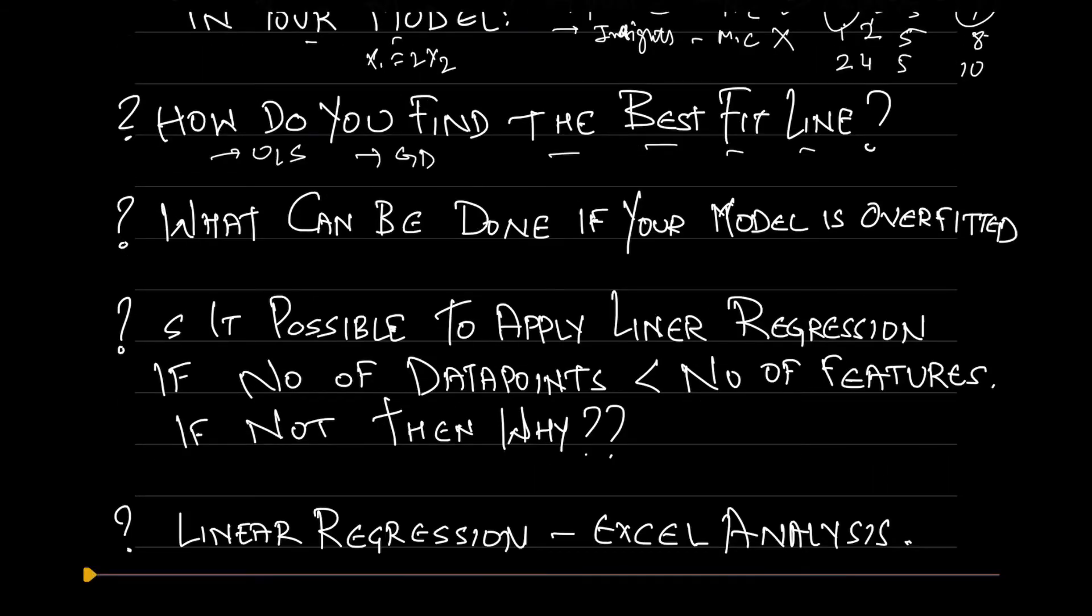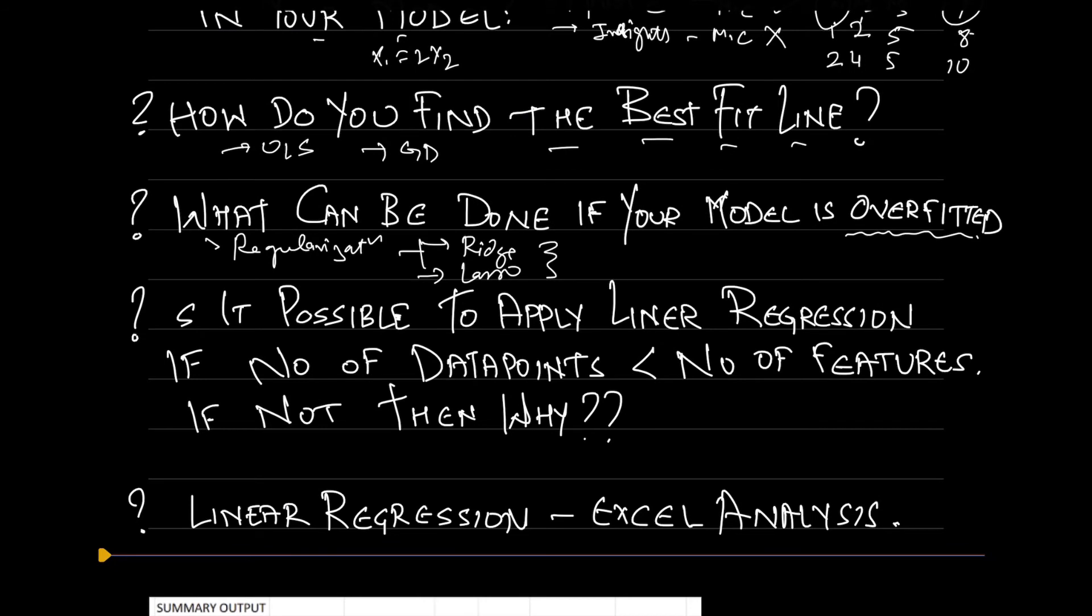Now the fifth question is: what can be done if your model is overfitted? Regularization is a technique which you can implement if your model is overfitted, and there are mainly two types of regularization technique: ridge and lasso. These are the main types of regularization techniques. Go through both these techniques in detail and you should be able to explain when we should go for which kind of regularization technique and how these two are different from each other.